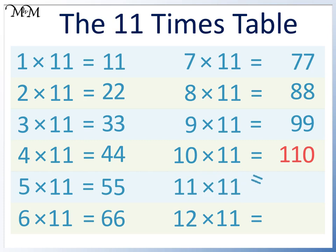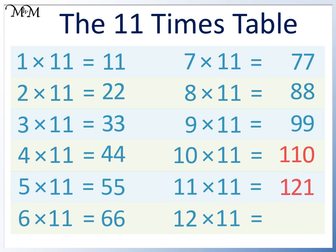11 times 11 equals 110 plus another 11. We have 100 — add 1 to the tens column and 1 to the units column to get 2 and 1, so 11 times 11 equals 121. For 12 times 11, we write 100 and increase both digits by 1 to get 3 and 2 — 12 times 11 equals 132.